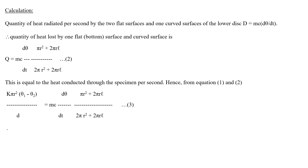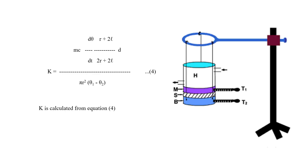The surface area of the flat surface is πr², and the curved surface area is 2πrl. Therefore, the heat conducted through the specimen per second is proportional to (πr²) / (πr² + 2πrl) of the total heat radiated. Equating the two expressions: k × πr² × (θ1 − θ2) / d = mc × dθ/dt × πr² / (πr² + 2πrl).